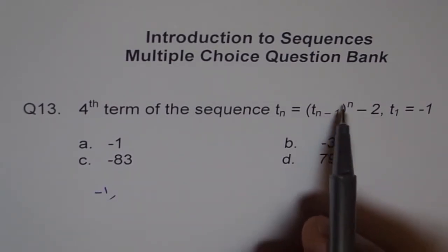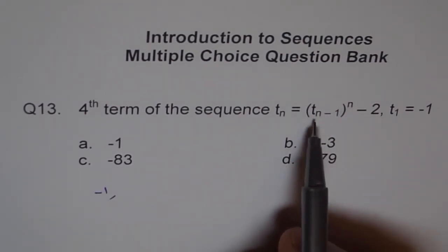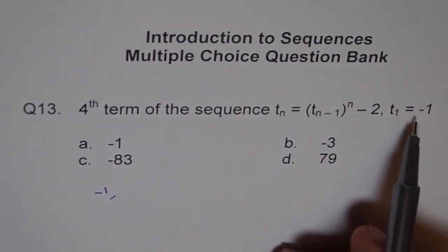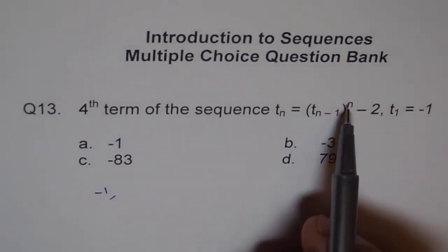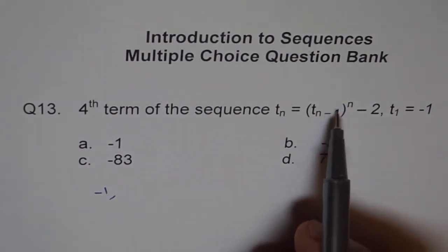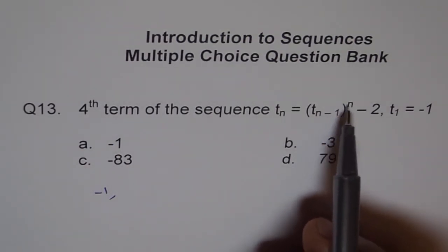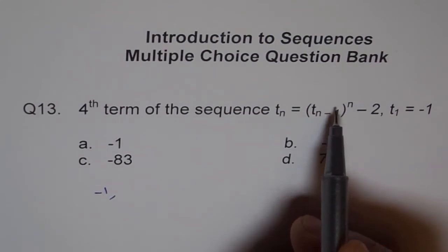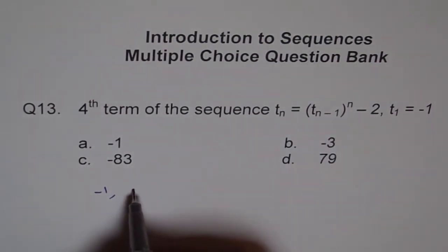Now, if I put 2 for n, then n-1 is t_1, which is -1. So we get (-1)^2, which becomes positive. So 1 - 2 is -1 again.